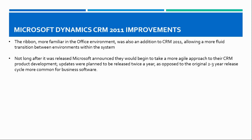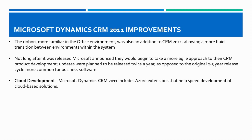After CRM 2011 was released, Microsoft announced that they would begin to take a more agile approach to their CRM product development. Updates were planned to be released twice a year, as opposed to the original two-to-three year release cycle for common business software. With CRM 2011 it was also now possible to do programmatic extension in a cloud environment.